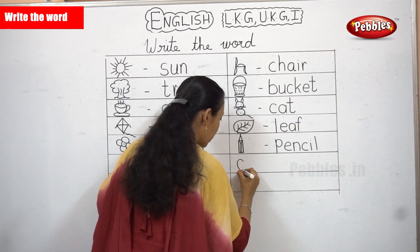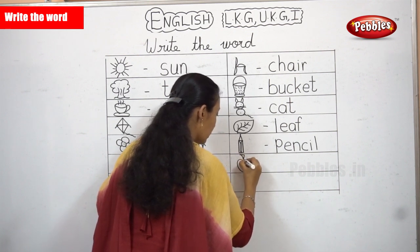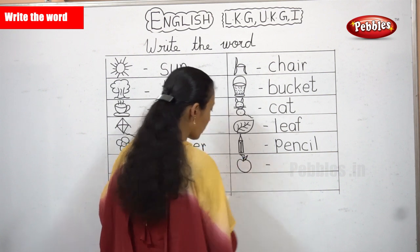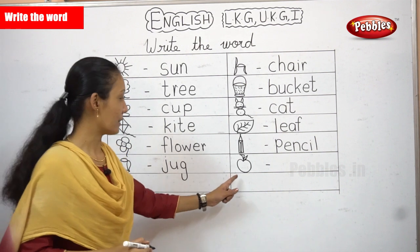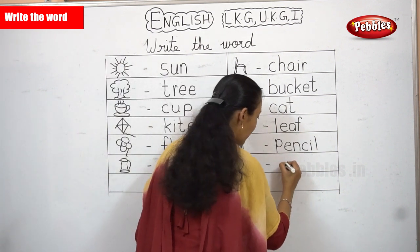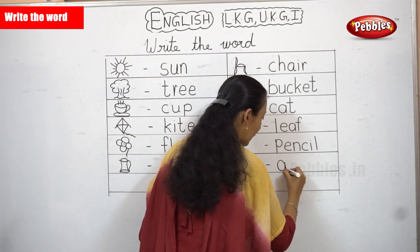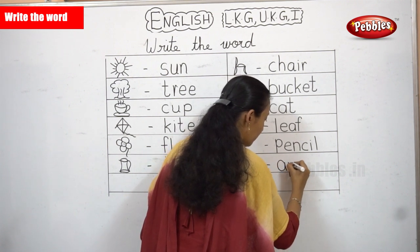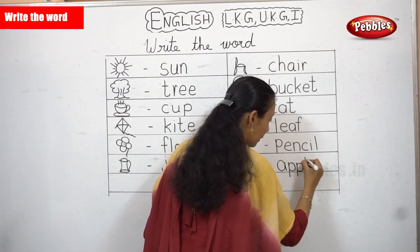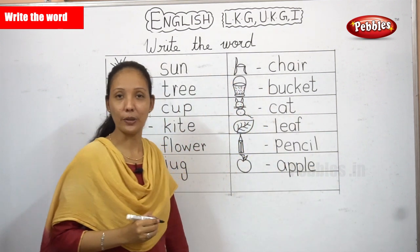I think all of you will know to draw this picture also. What is this? Apple. What's the spelling for apple? A-P-P-L-E. Apple.